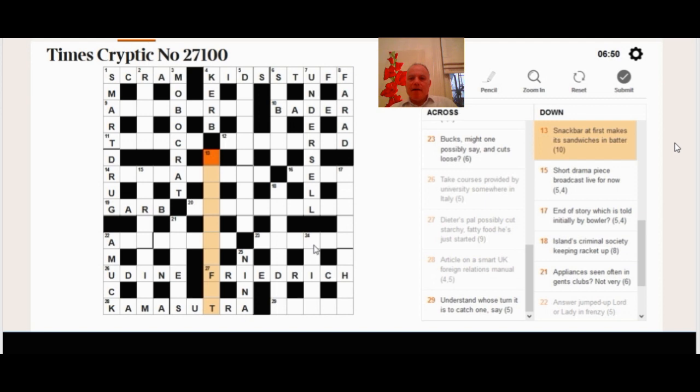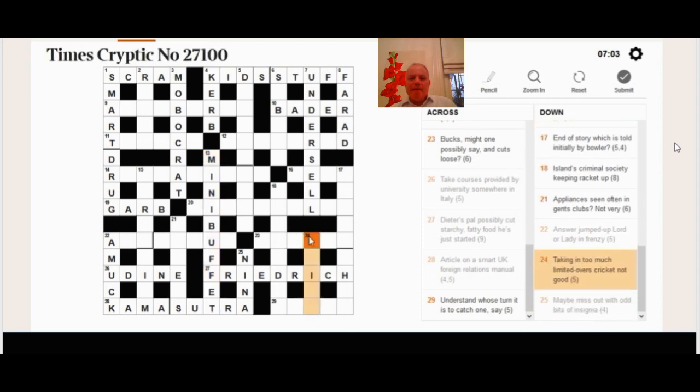So the snack bar now. Somehow I come up with at first makes its sandwiches in batter. And batter can be buffet. So at first makes its is the letters MI. And that's sandwiched in to begin the clue. So it's a fat mini buffet.